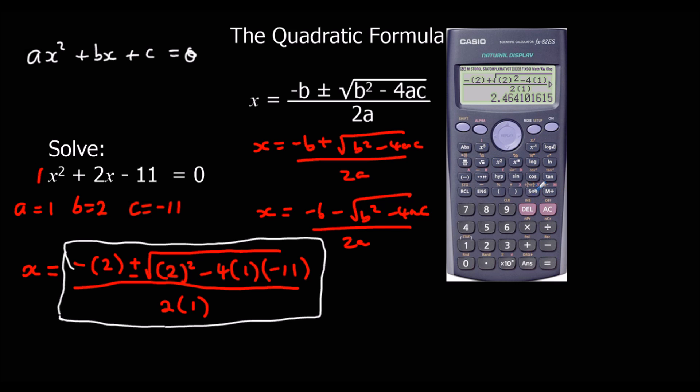Press equals, and then you're going to have to press the SD button here, S to D button, to get a decimal answer, otherwise you would get a square root answer.